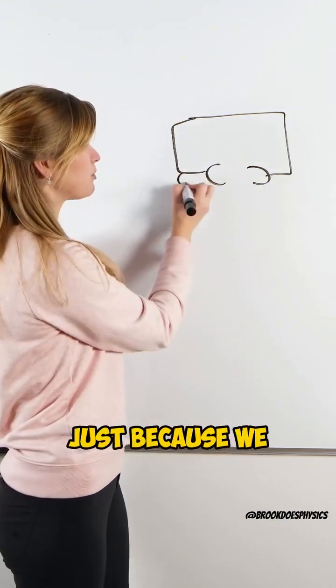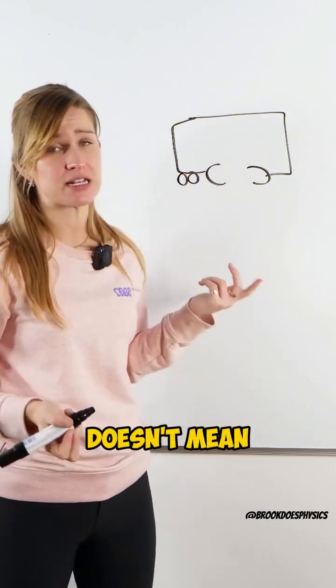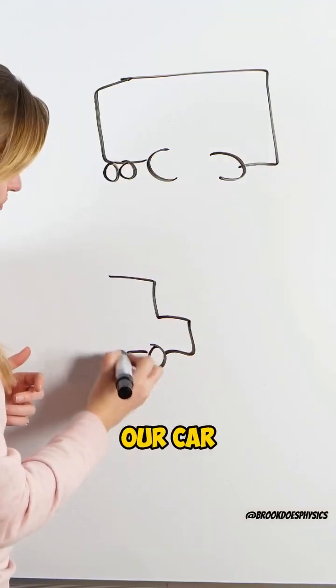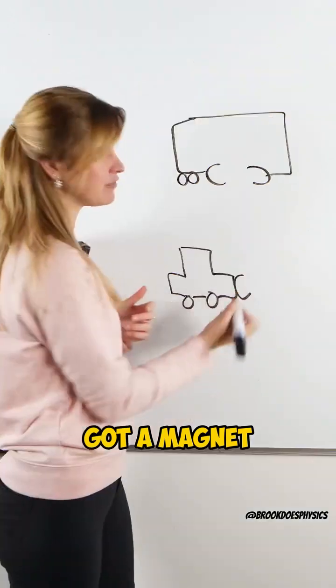Right, how would that move? Just because we put wheels on one side of it doesn't mean it's going to start moving. So we look here, what we have is our car and we've got a magnet in front of it, and the car is attached to the other magnet similar to above.